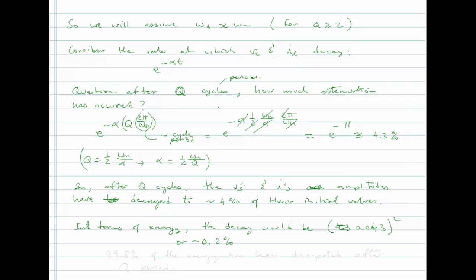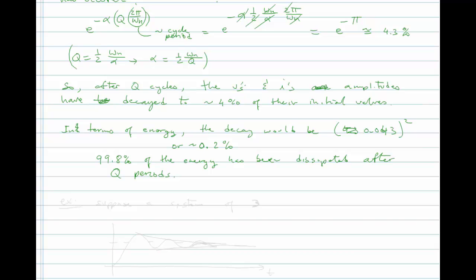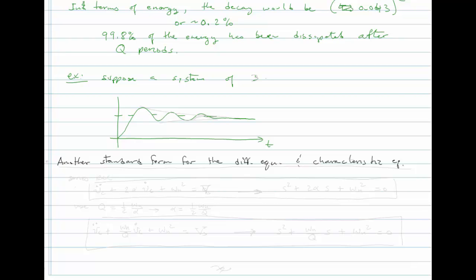In terms of energy, the decay would be 4.3% squared, or about 0.2%, meaning 99.8% of the energy has been dissipated after Q periods. This is very handy: if a system has Q equal to 3, you'd expect about 3 visible oscillatory cycles before decay. If Q is 30, you'd expect about 30 oscillations.